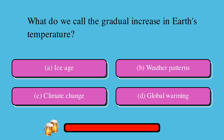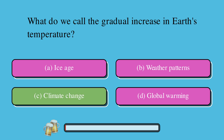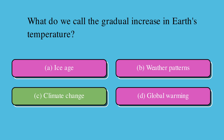What do we call the gradual increase in Earth's temperature? A. Ice age, B. Weather patterns, C. Climate change, or D. Global warming? The correct answer is C. Climate change.